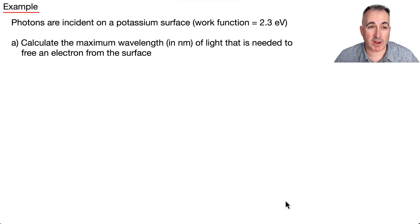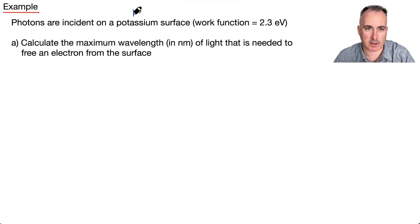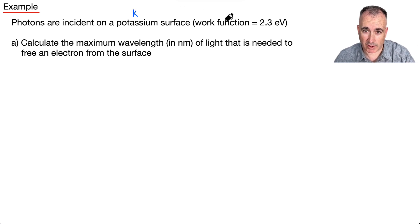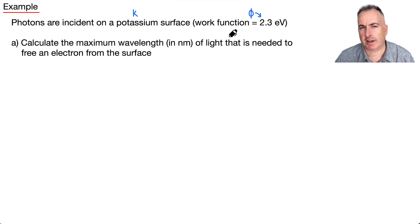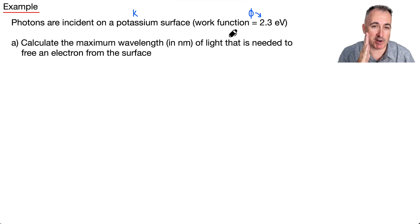Let's do an example. Photons are incident on a potassium surface. The work function φ is 2.3 electron volts. The question is: what's the maximum wavelength of light needed to free an electron from the surface? Why maximum wavelength? Because frequency and wavelength are opposite. The threshold frequency is the minimum frequency, and that corresponds to a maximum wavelength.